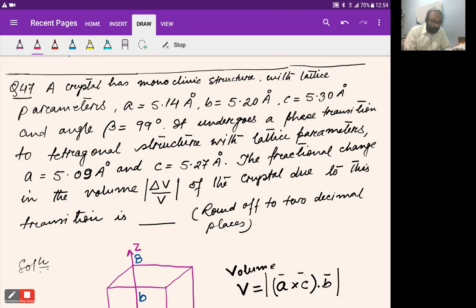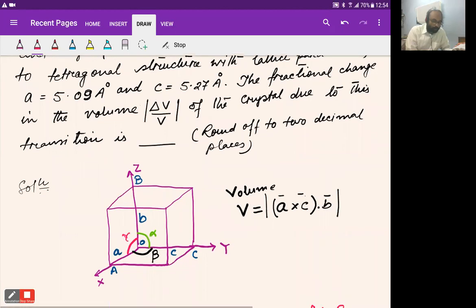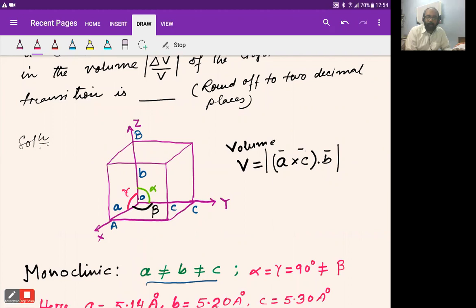needs to be rounded to two decimal places. For a simple cubic unit cell, the volume can be written as (a × c) · b, where a, b, c are lattice parameters. α is the angle between b and c, β is the angle between a and c, and γ is the angle between a and b.